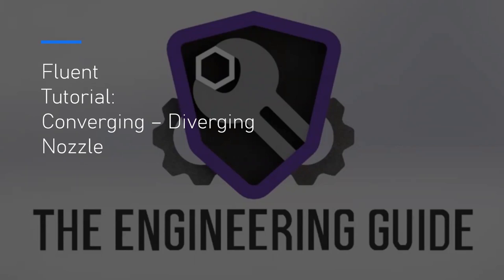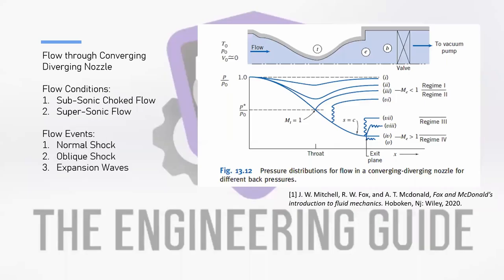Welcome back to another video. This is going to be part two of the Fluent tutorial for a converging-diverging nozzle. In the first video we looked at the flow through a converging-diverging nozzle, more specifically for the subsonic choke flow condition, where we had subsonic flow entering our converging-diverging nozzle.